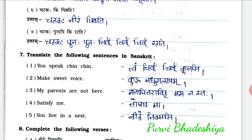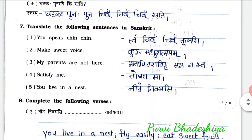7th: Chattakah punarapi kim vodati? — answer is Chattakah punarapi chivu chivu chivu ratati. Exercise 7: translate the following sentences into Sanskrit. 1st: You speak chin chin. 2nd: Make sweet voice — answer is kuru madhuralapam. 3rd: My parents are not here. 4th: Satisfy me — answer is toshaya ma. 5th: You live in a nest — answer is nide nivasasi.